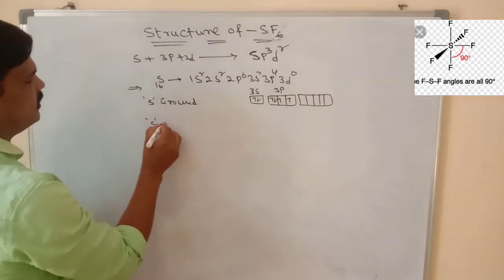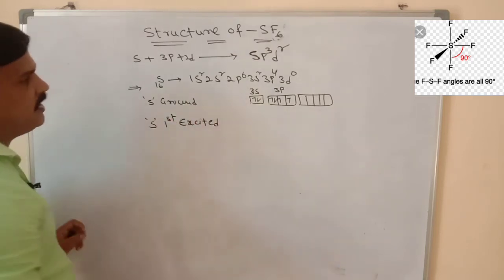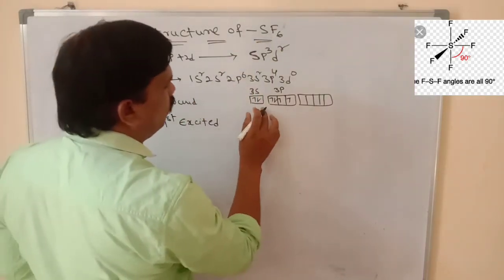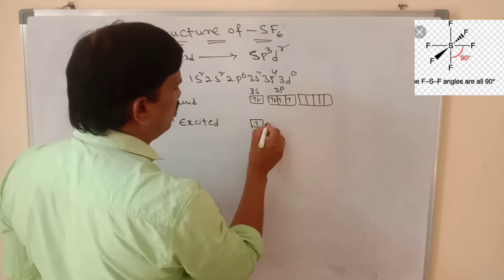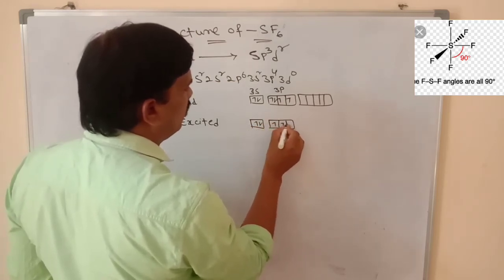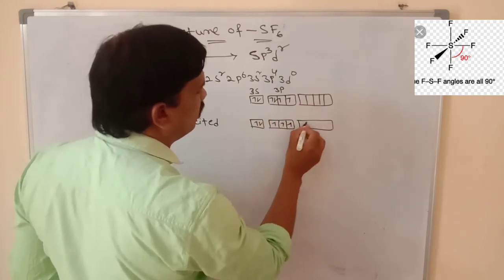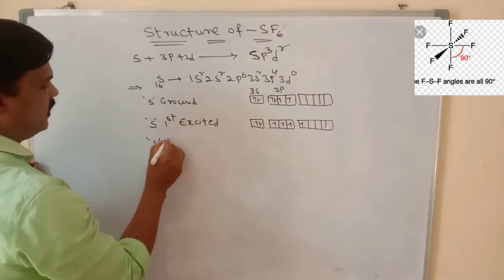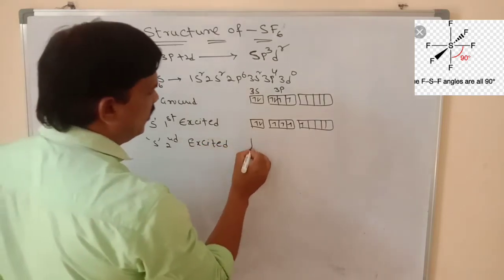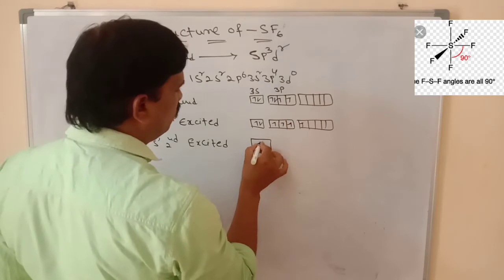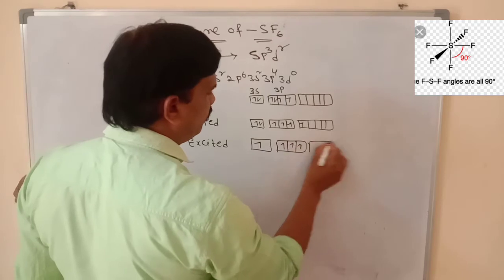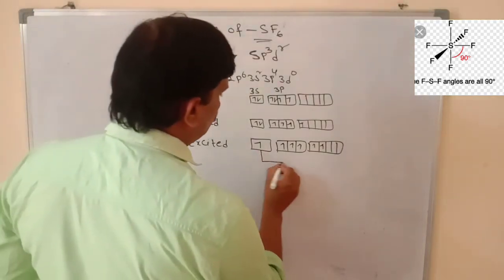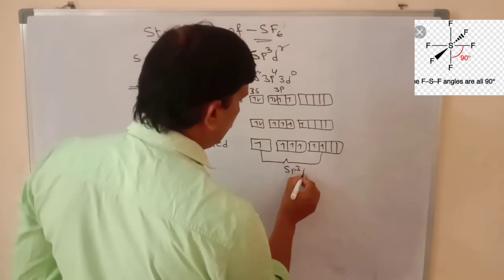Sulfur has only two unpaired electrons in the ground state, but six fluorines need six sigma bonds. So we write the first excited state: one 3p electron is promoted to the dxy orbital, giving 4 unpaired electrons. Then in the second excited state, one 3s electron is promoted to the dyz orbital, giving 6 unpaired electrons. These six unpaired electrons combine to give 6 sp3d2 hybrid orbitals of equal energy and same shape.